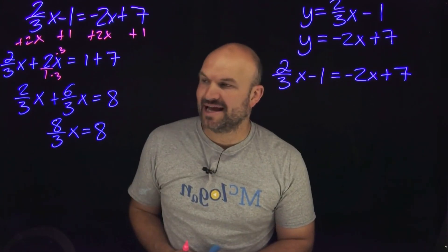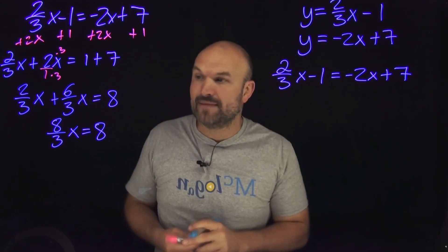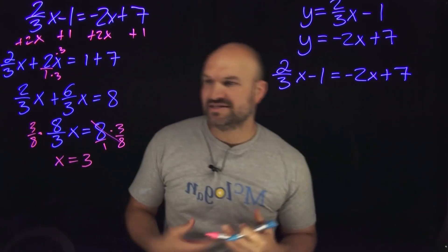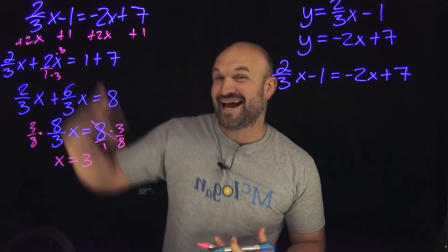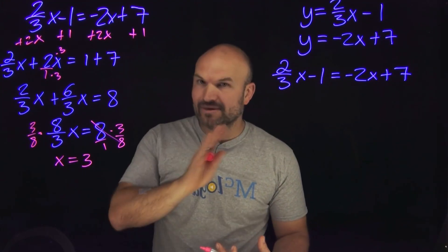And now if I need to go ahead and solve for x, all I need to do is divide by 8 thirds or multiply by the reciprocal on both sides. And now you can see that when I multiply by the reciprocal here, the 8s are going to divide out. That's now going to leave me with an x is equal to 3.